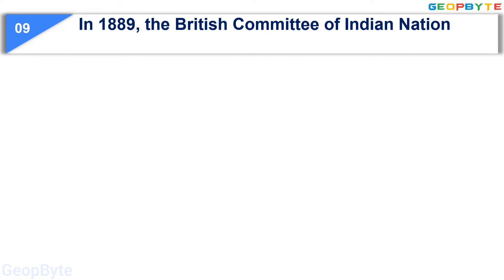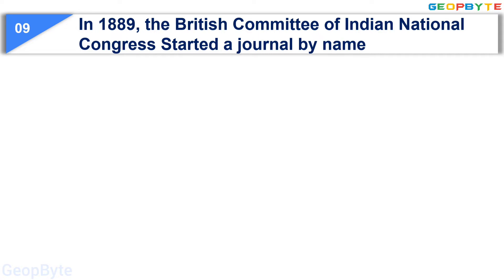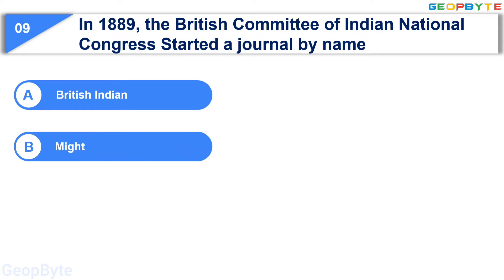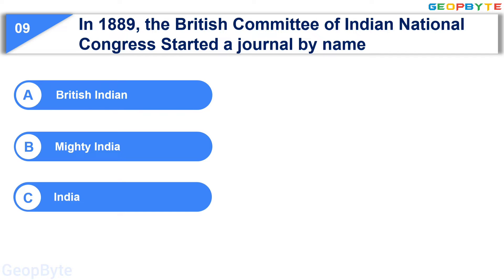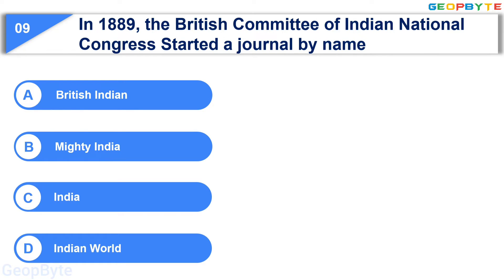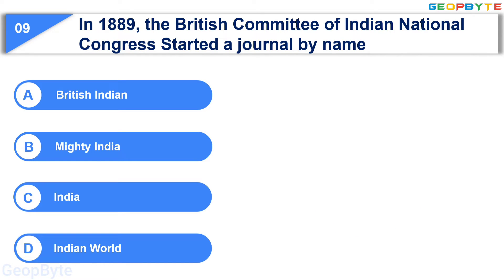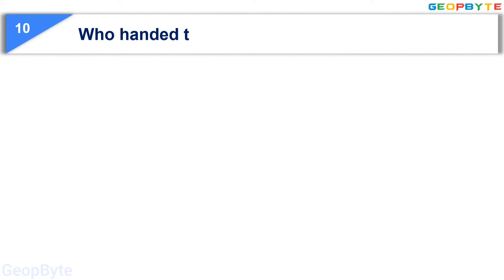Moving to the ninth question: in 1889, the British Committee of the Indian National Congress started a journal by the name — Option A: British Indian, Option B: Mighty India, Option C: India, Option D: Indian World. Your time starts now. Your time is up and the correct answer is Option C: India.